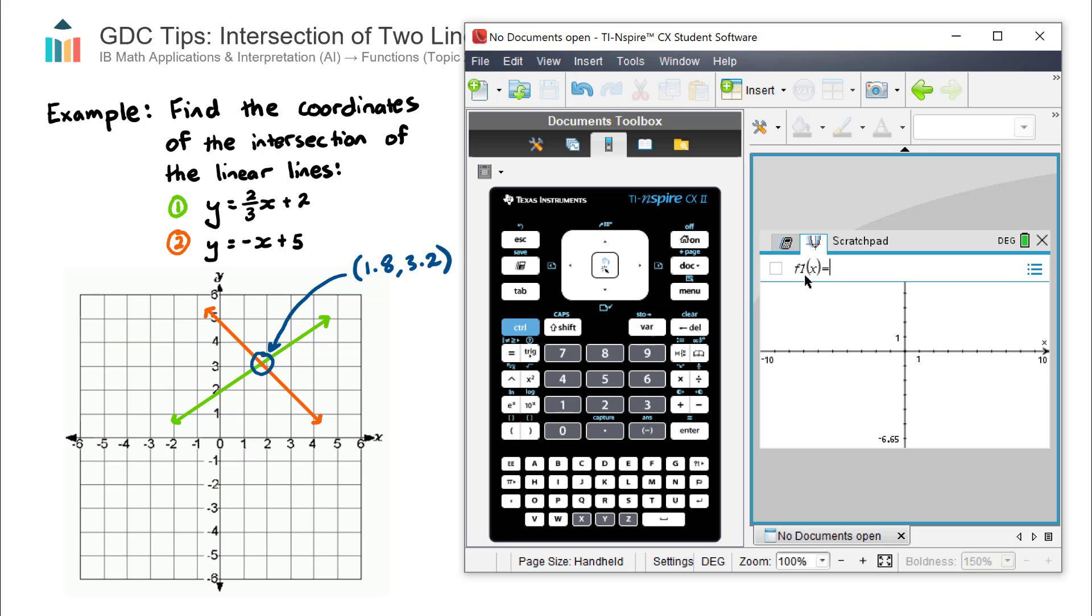Let's go ahead and enter our two linear lines. So the first one, which is F1X, so the first function we're going to enter. In the graphing section, we don't type Y equals. We just type the right hand side. So we have two on three, X plus two. Hit enter.